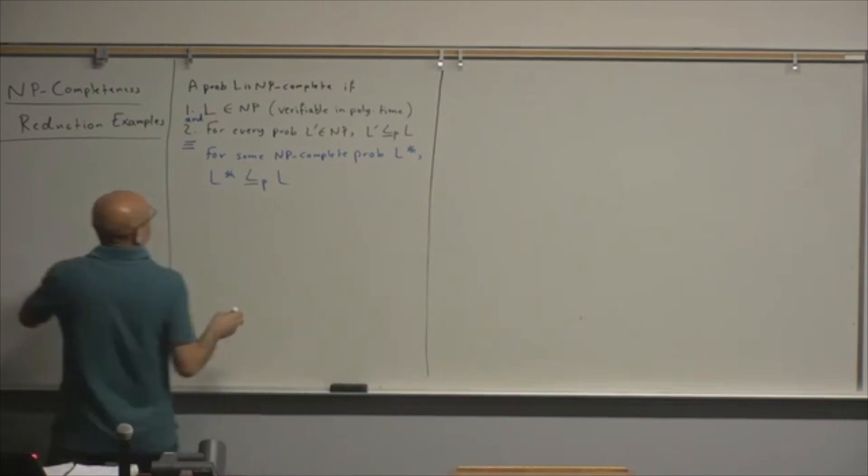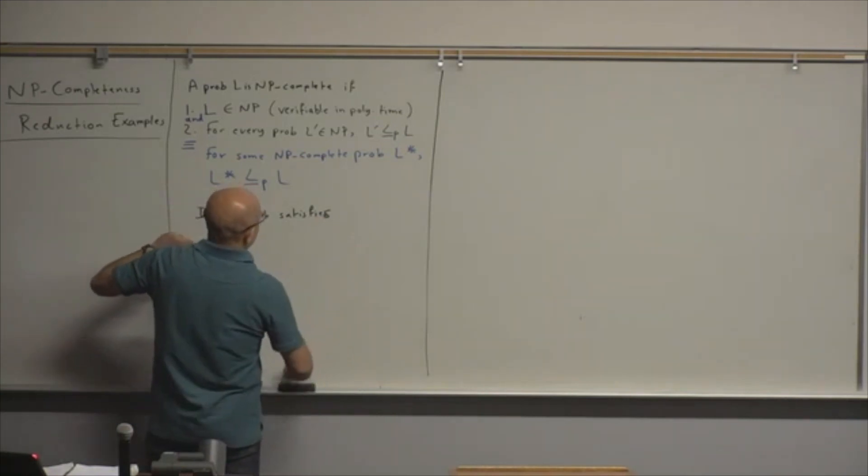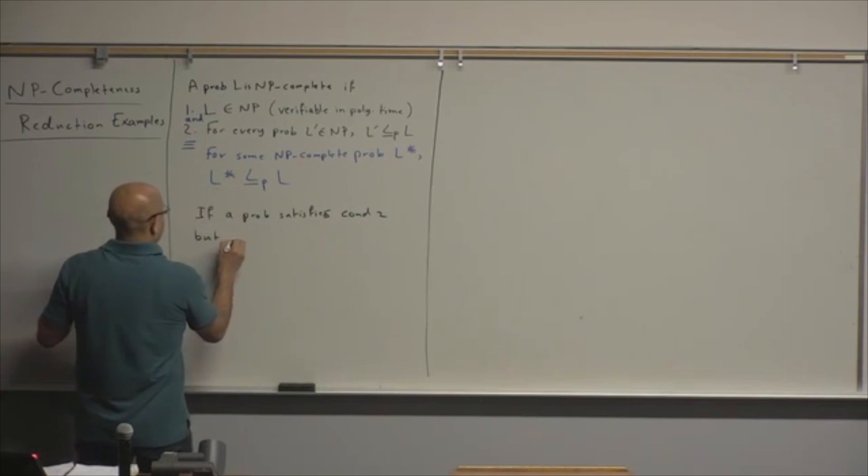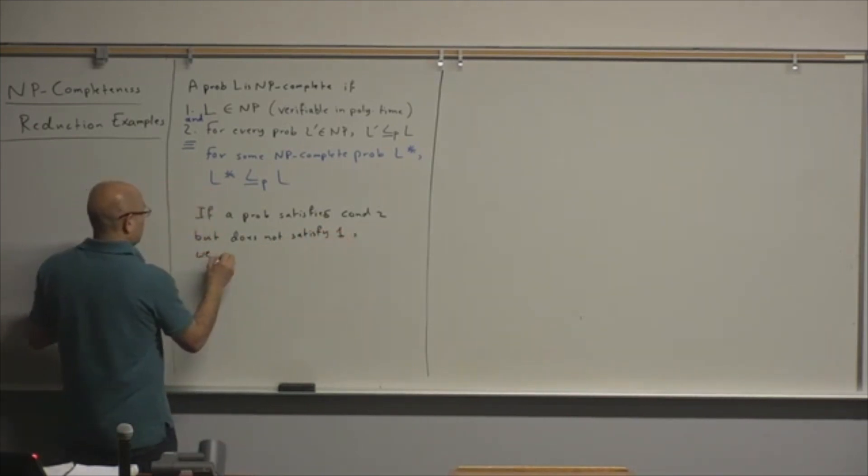Now, the last thing to review the theory: if a problem satisfies condition two but does not satisfy one, what do we call it? NP-hard. We call it NP-hard.